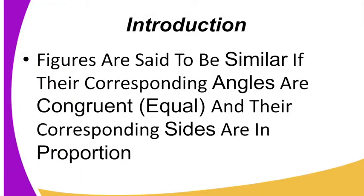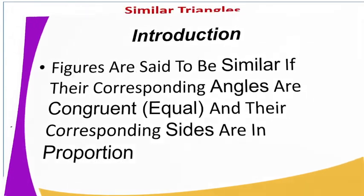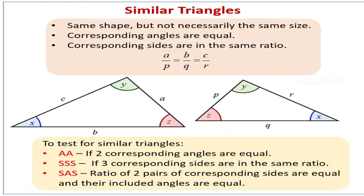So in our introduction, figures are said to be similar if their corresponding angles are equal and their corresponding sides are proportional. You can see from our diagram, angle Z and angle Z are equal and their corresponding sides are also equal.